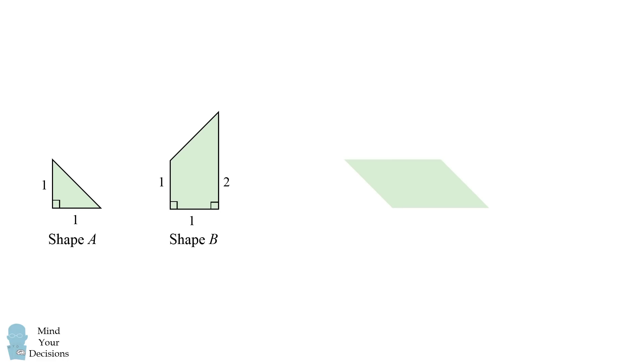The final shape we can form is this trapezoid. How do we do that? We'll start out with our two shapes. Now let's rotate shape B, and then rotate shape A. Then we'll join them. And that's how we form this trapezoid.